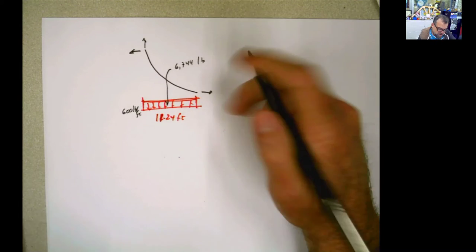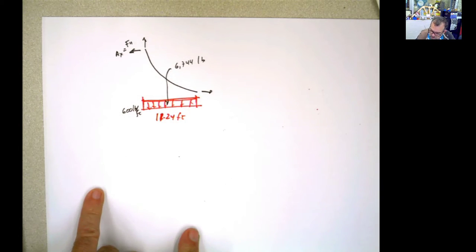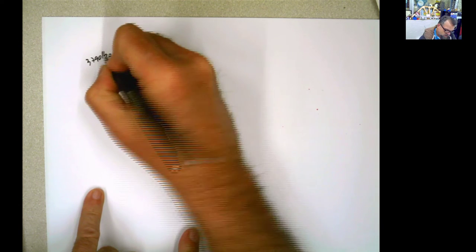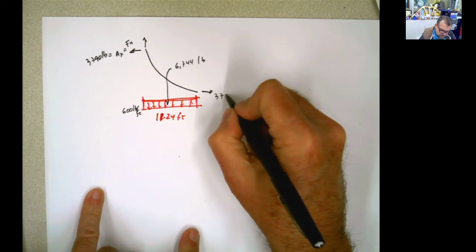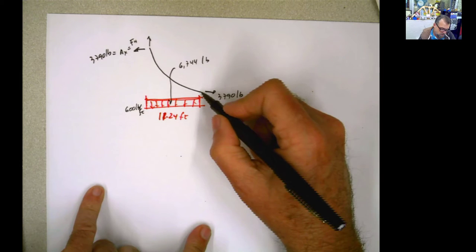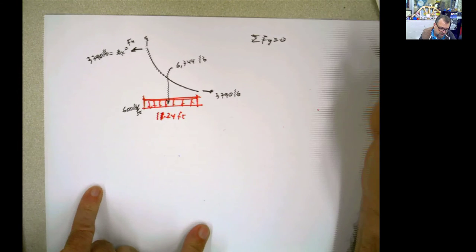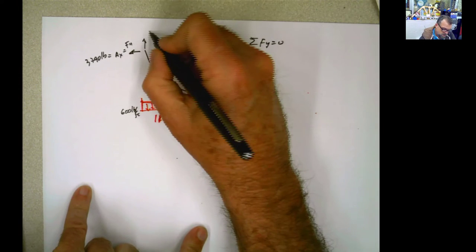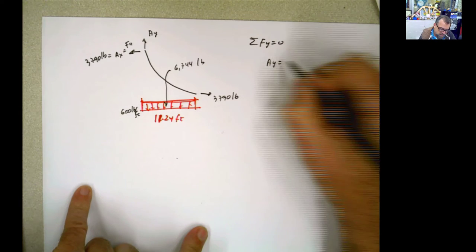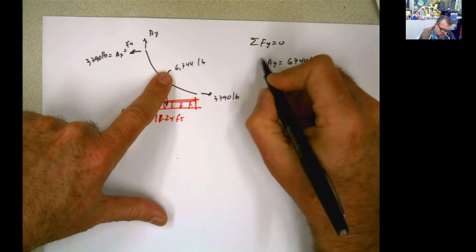OK, now if you have this, and this is Ax equals FH, and we know it, which is 3,790 pounds, and this is also 3,790 pounds, I could make moment here. I could do summation of moments here. But I can do also summation of forces in y equals 0. And if I do summation of forces in y equals 0, this reaction, which is Ay, Ay is going to be equal to 6,744 pounds. There you go, done.